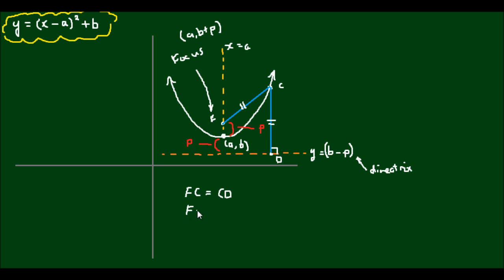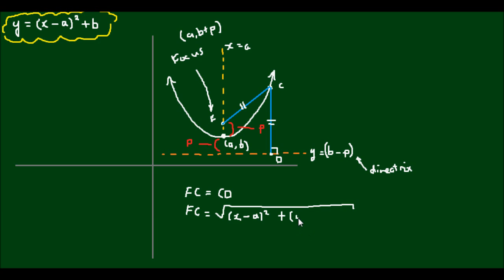The distance fc is equal to the distance cd. The distance fc can be found using the distance formula — the formula for finding the distance between two points — and it's simply the square root of (x - a)² plus (y - (b + p))², where x is the x-coordinate of c, a is the x-coordinate of the focus, and b + p is the y-coordinate of the focus.